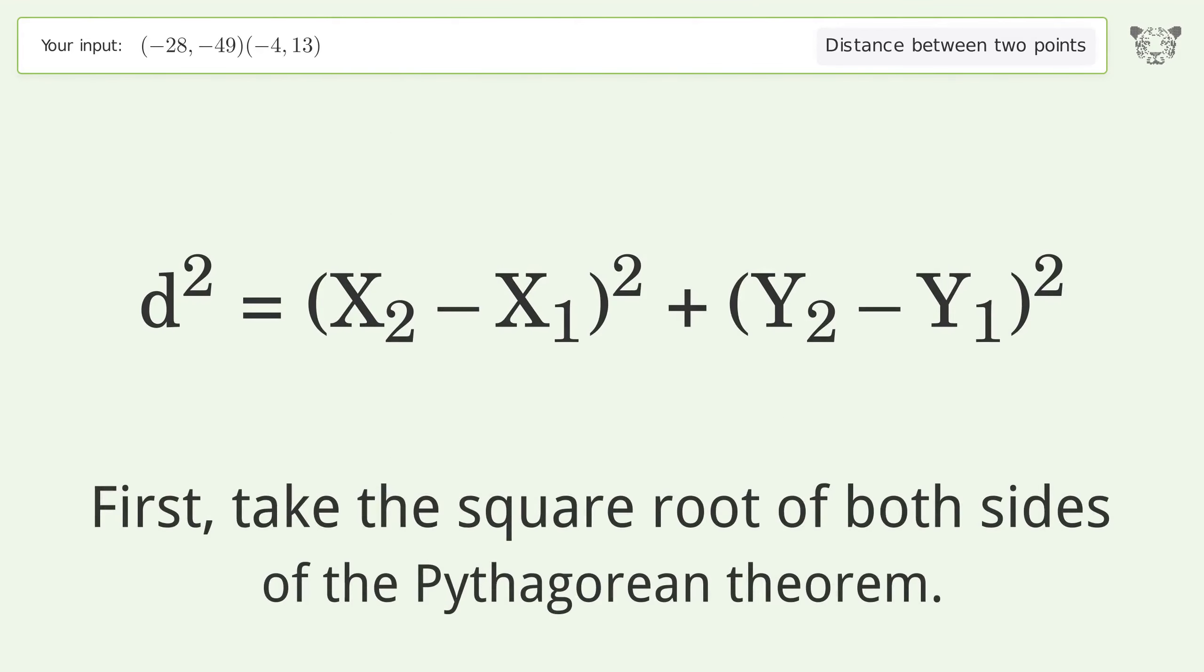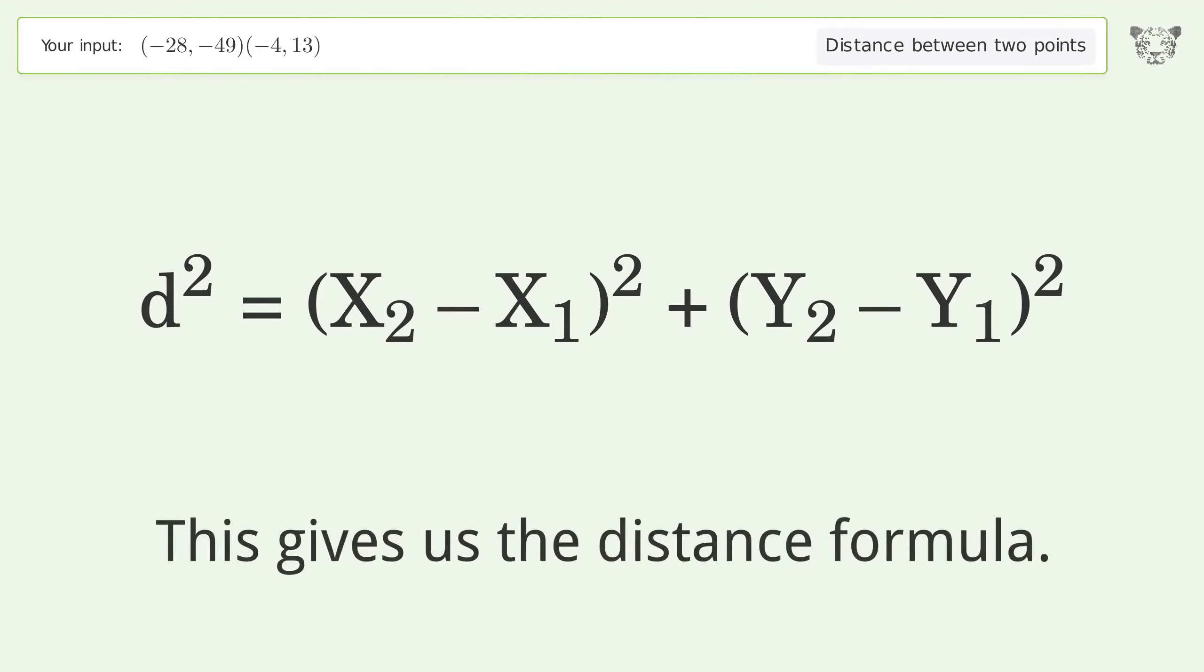First, take the square root of both sides of the Pythagorean theorem. This gives us the distance formula.